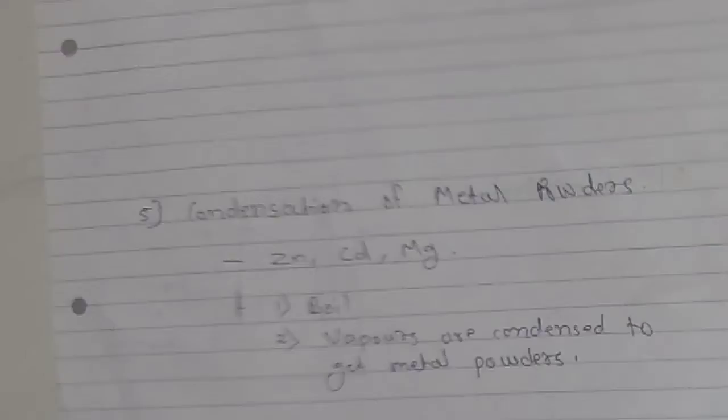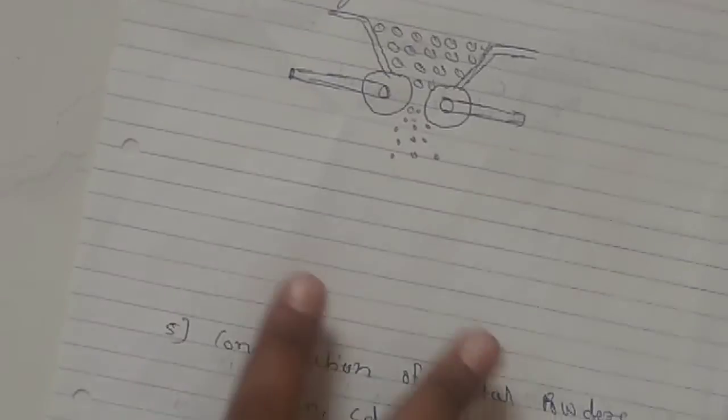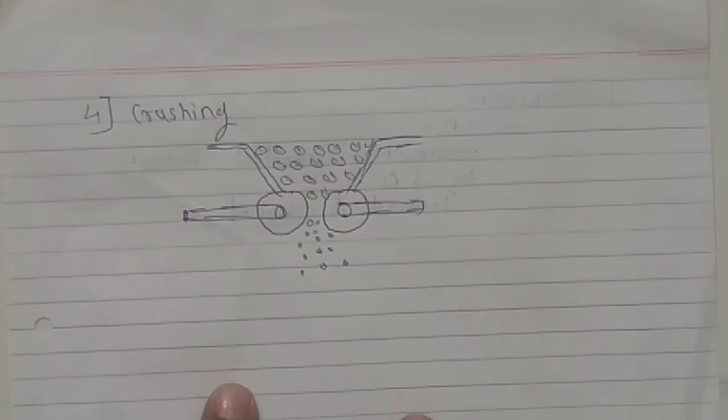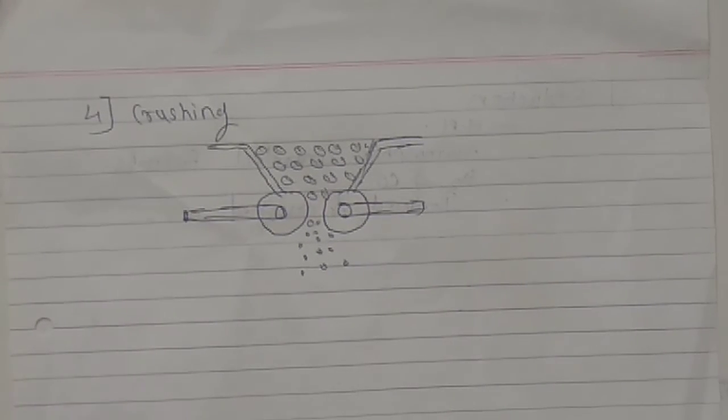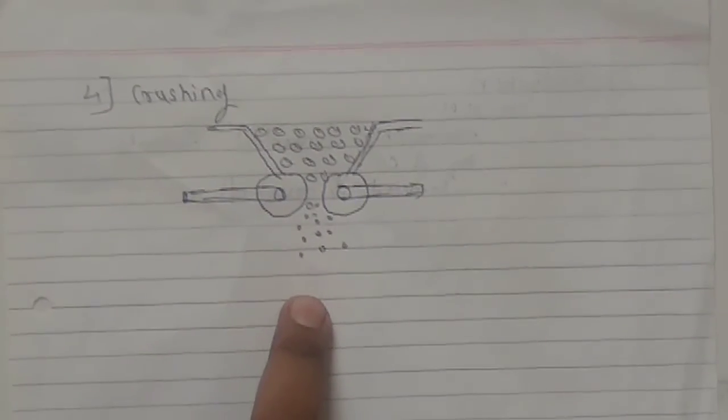The next method is crushing. This is the simplest method. You can take scrap metals and crush them using rollers, hammers, etc. After crushing, you will get fine metal powder.